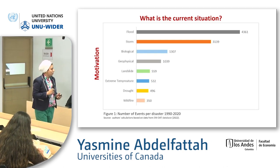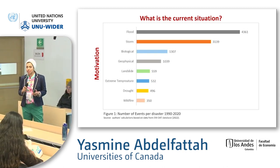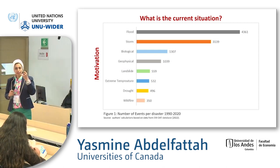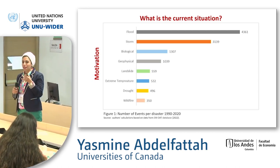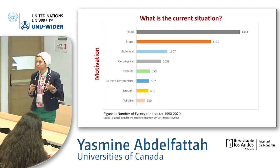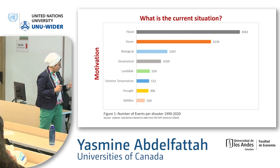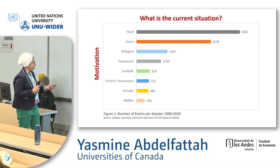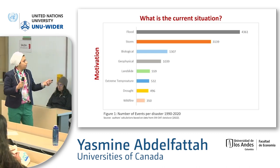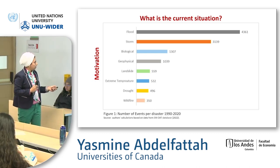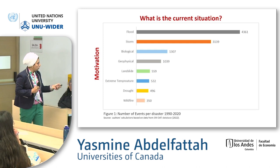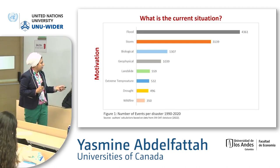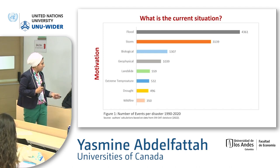Our first indicator is disaster, which we examine through three lenses: frequency and intensity, how it affects people, and the damage in monetary terms. Looking at frequency, flood is first — pay attention to the number of events. Then storm, then geophysical, then drought. So flood and storm are the most common disasters, with geophysical fourth and drought seventh.